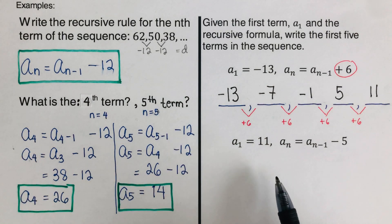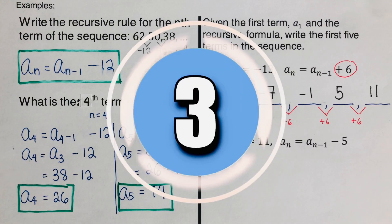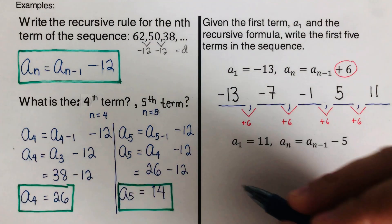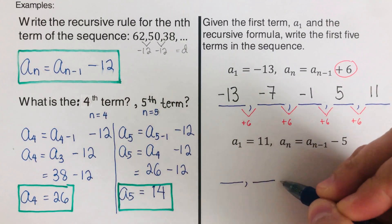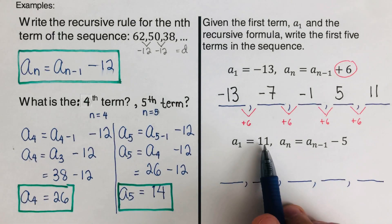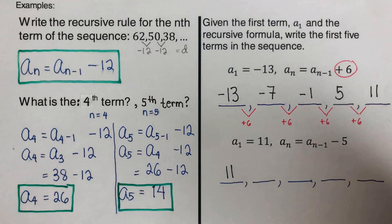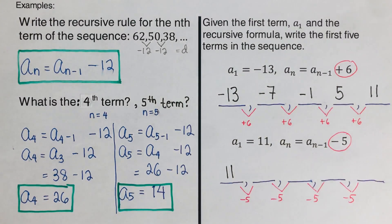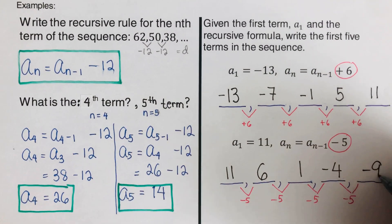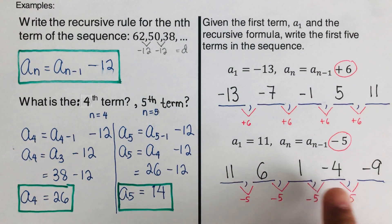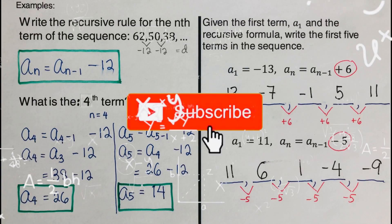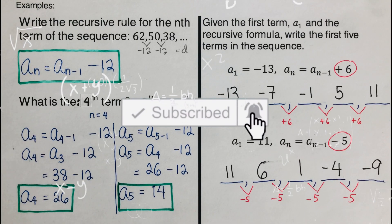At this time, I would encourage you to pause this video and try this problem out on your own, then unpause and check your answer. We go over the problem — we are supposed to write the first five terms, and this is the sequence that matches the given conditions. If you find this video helpful, hit like and subscribe for more math videos. See ya.